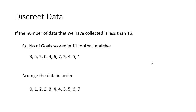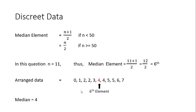First we look at the discrete data set. We have values with n less than 15 as an example — the number of goals scored in 11 football matches. The first thing we have to do is arrange the data in order, and in the second line we have arranged all the data in order.